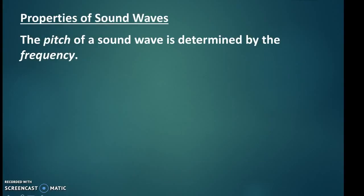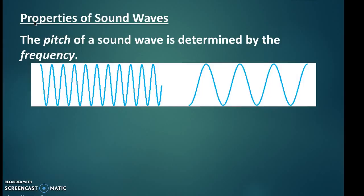Now we're going to look at some properties of sound waves. The pitch of a sound wave is determined by its frequency. Think of a really high-pitched sound, like a dog whistle or something, and a really low-pitched sound, like a foghorn maybe. The pitch depends on the frequency. Here's an example of two waves.